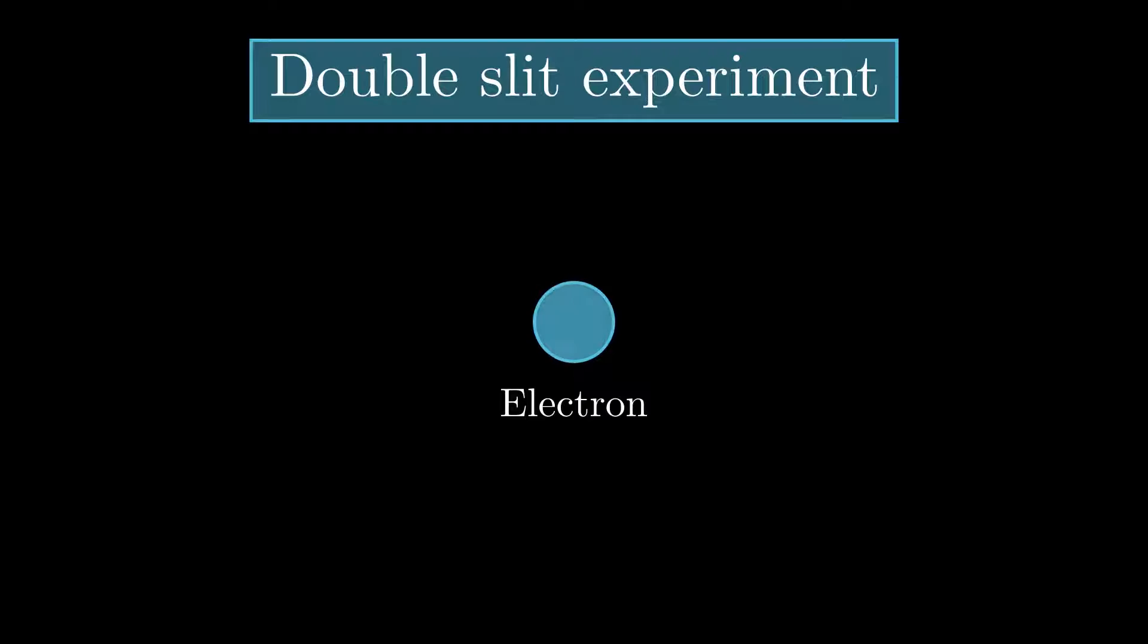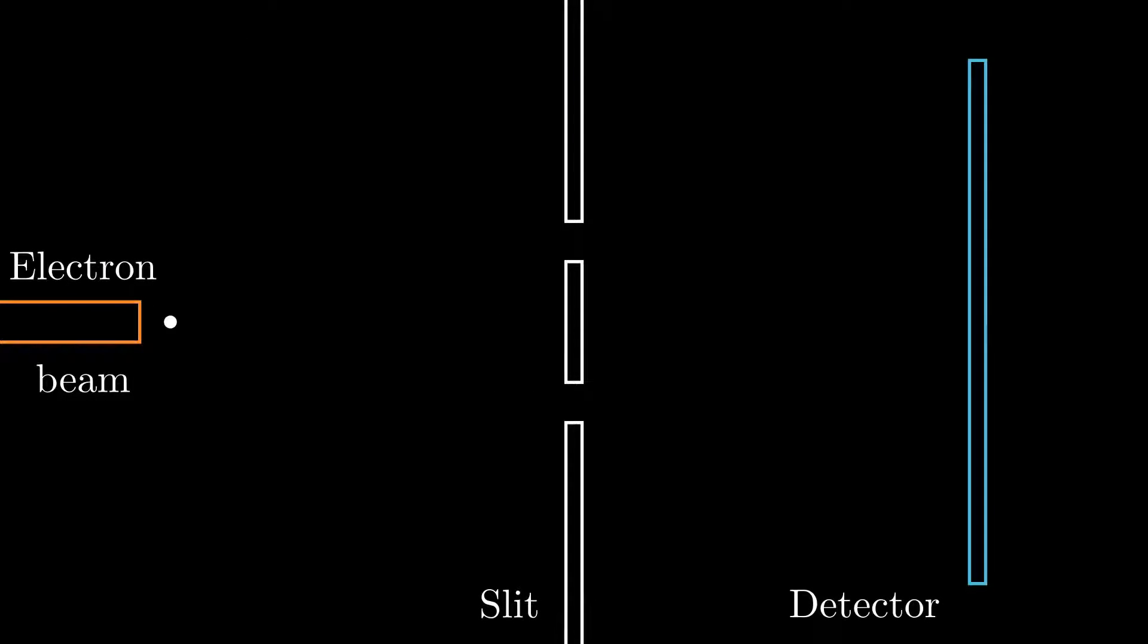The idea of this experiment is to fire many electrons at a wall with two slits, after which the electrons are caught on a detector behind the wall. Classically, you would expect the detector to show two shadow lines corresponding to each slit in the wall.